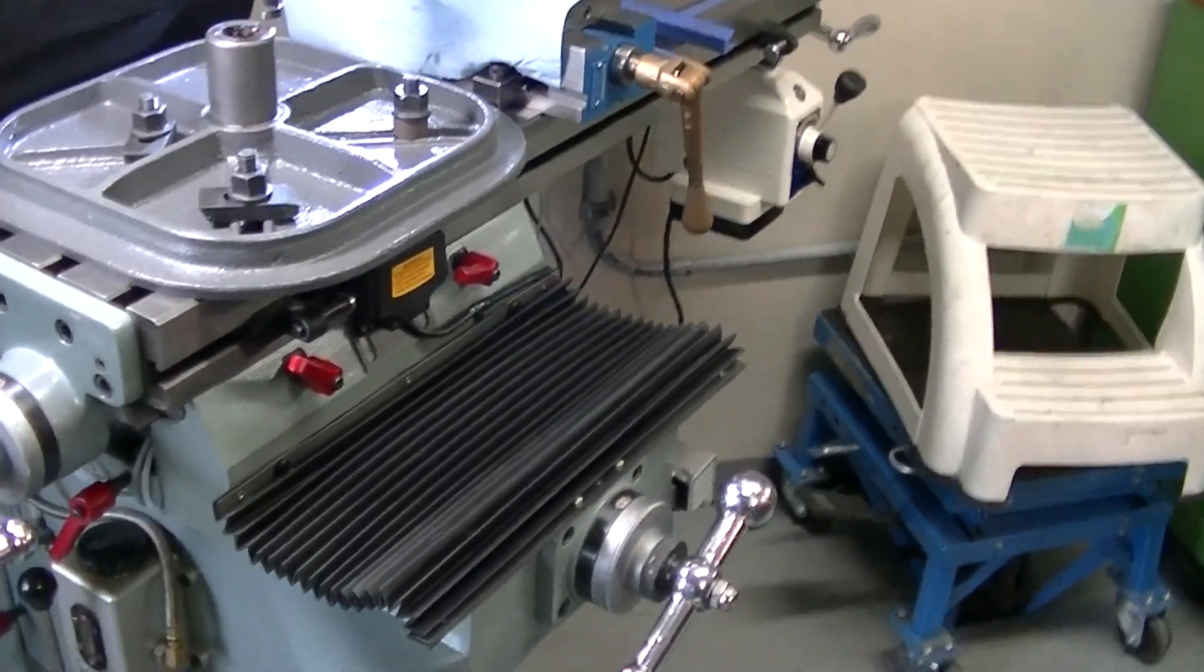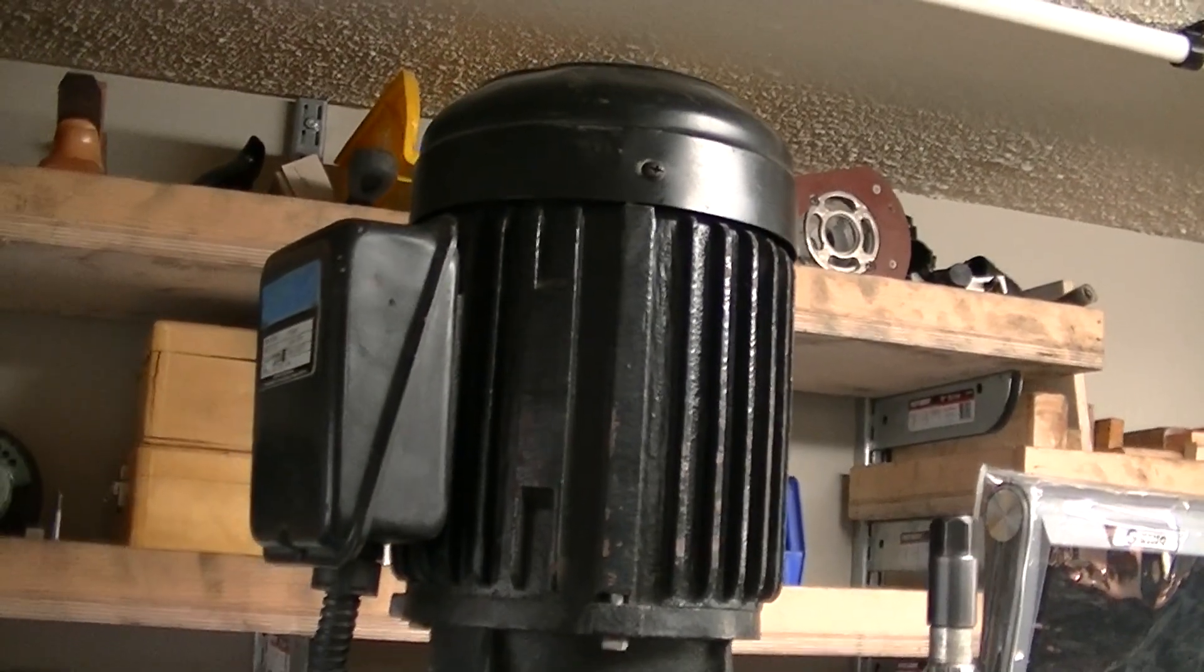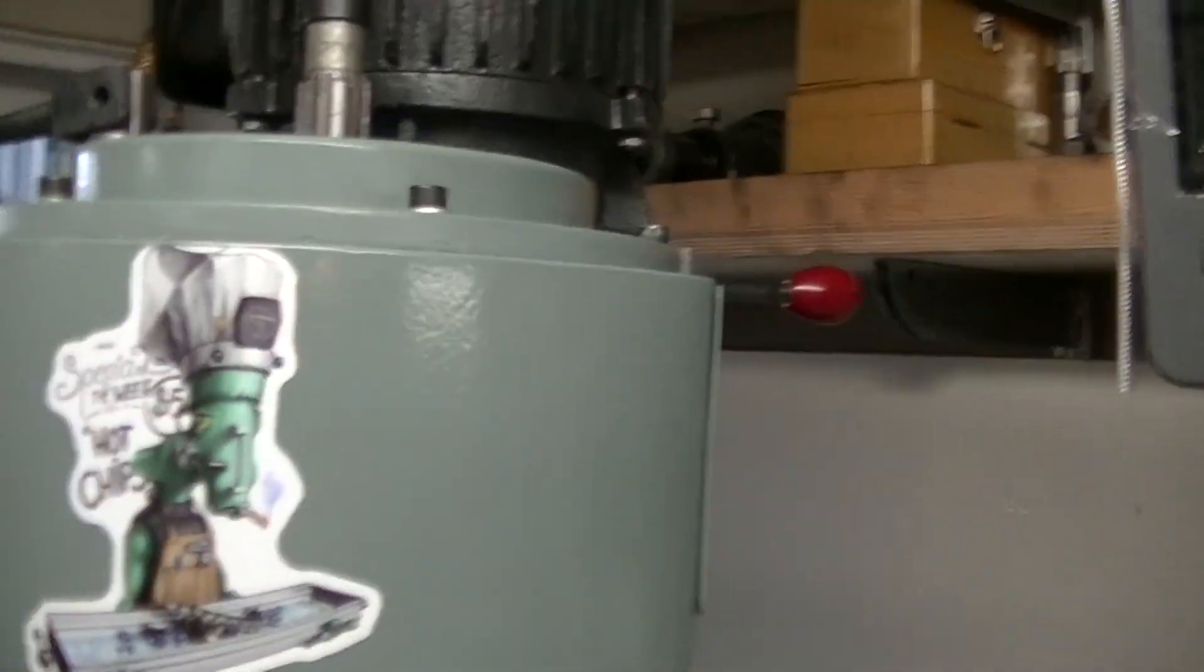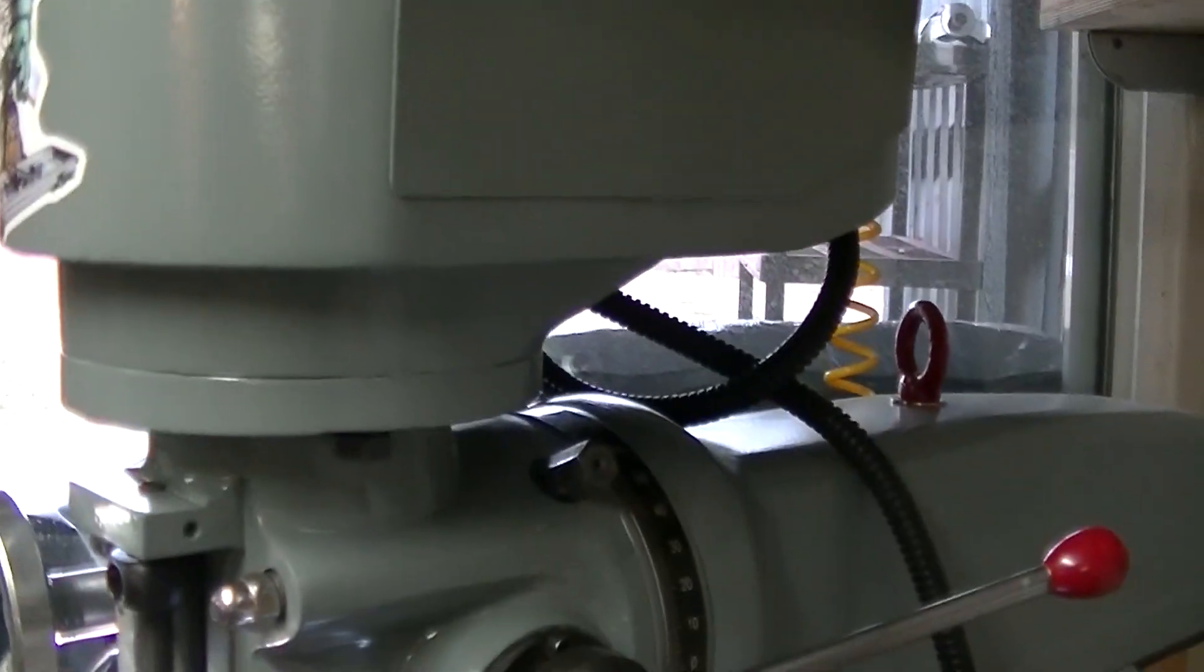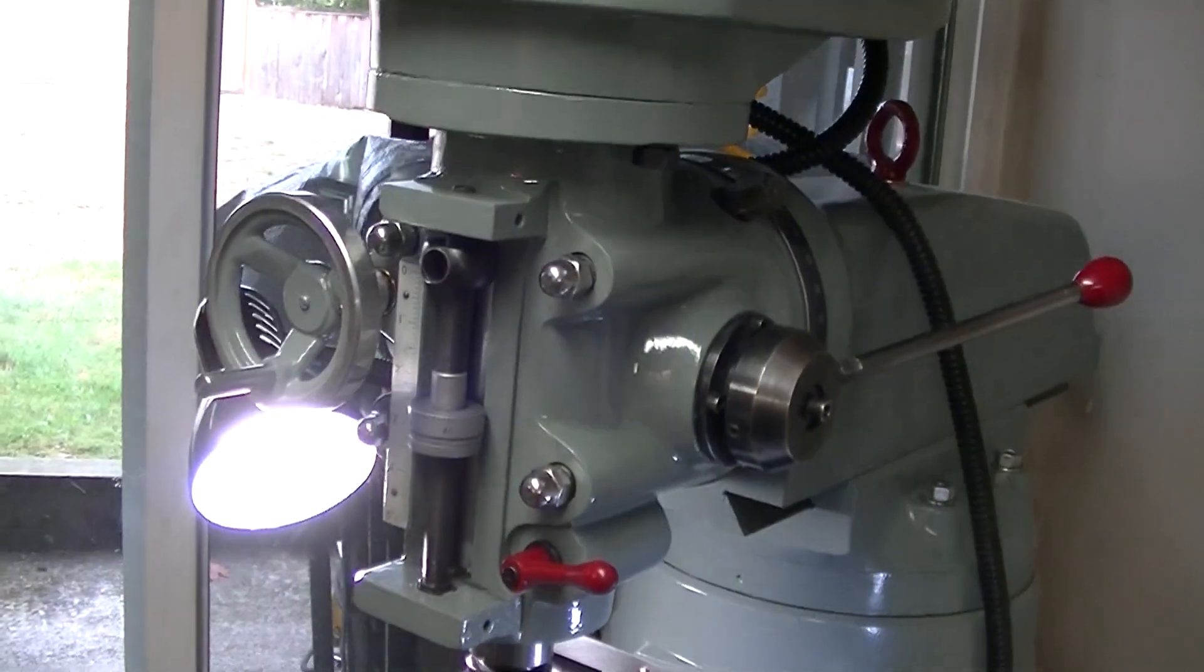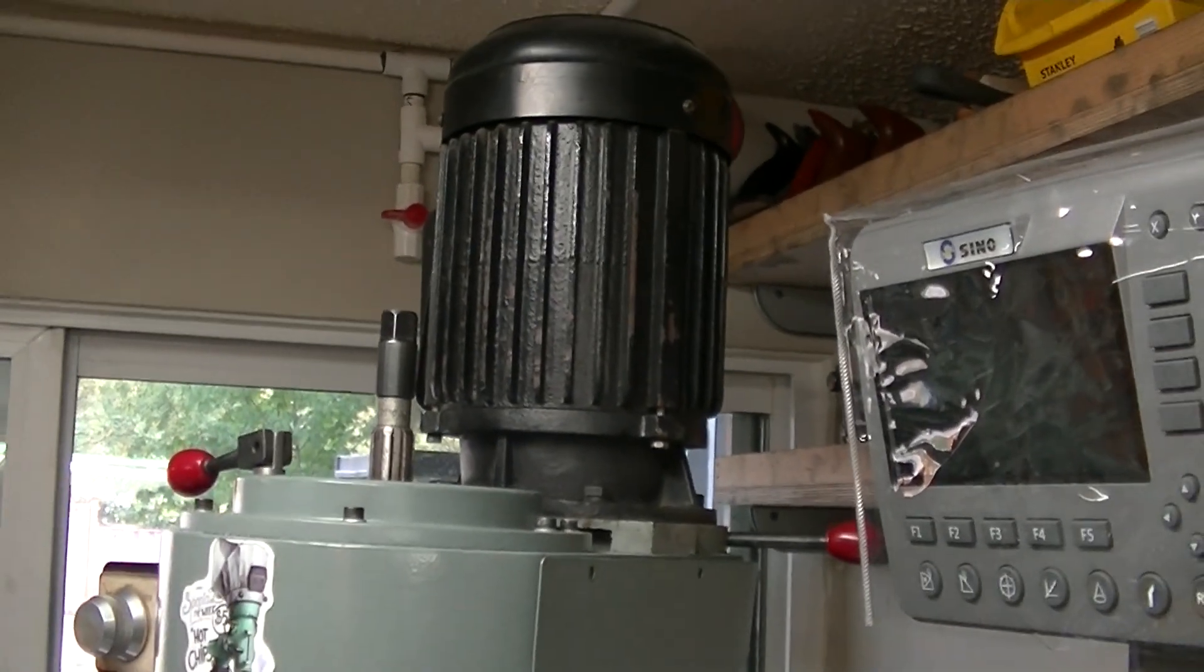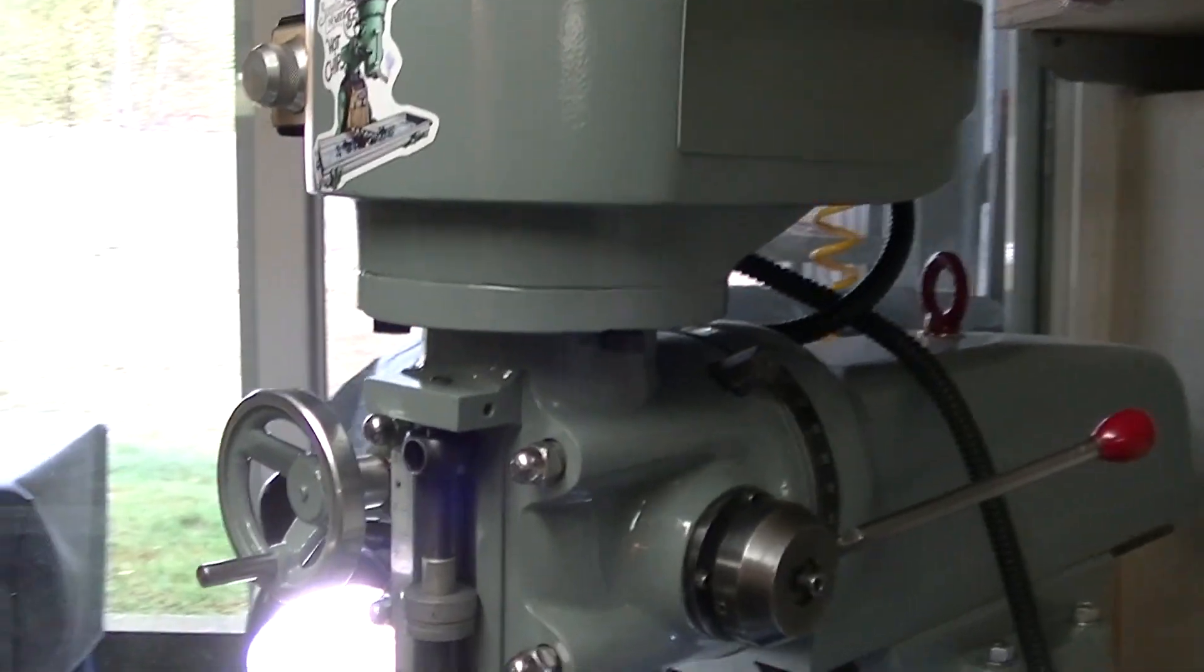So starting at the top, I've kept the single phase motor which I do plan on changing because this is a belt driven machine and it has a very limited number of speeds. Ideally, a different head with a back gear would be better, but I think going with a VFD and a three phase motor will help me get to some of the lower speeds that I need, even though I may not have the torque.